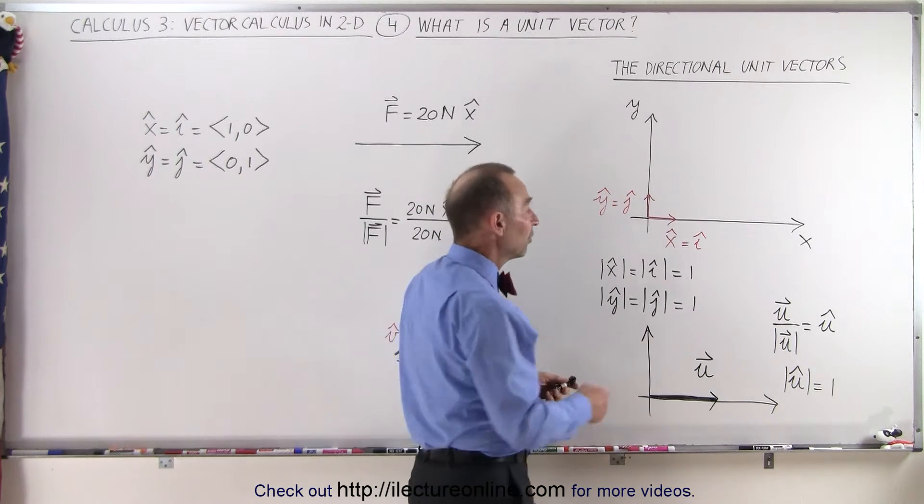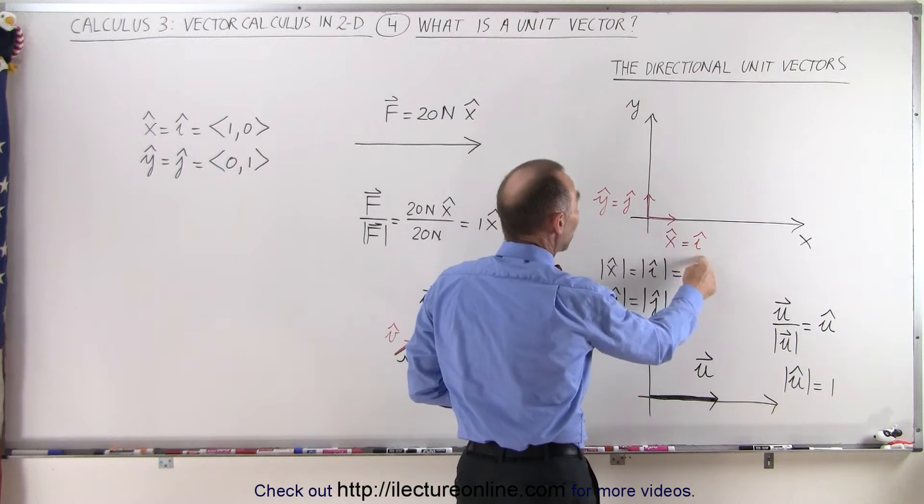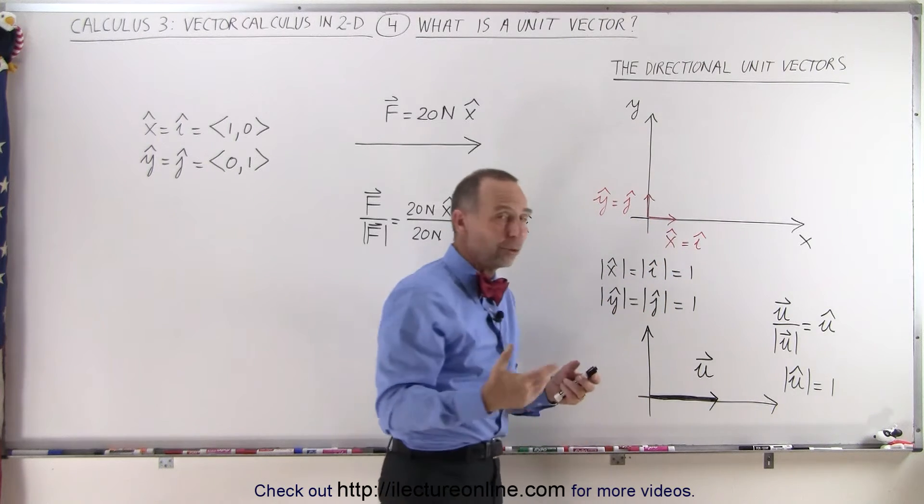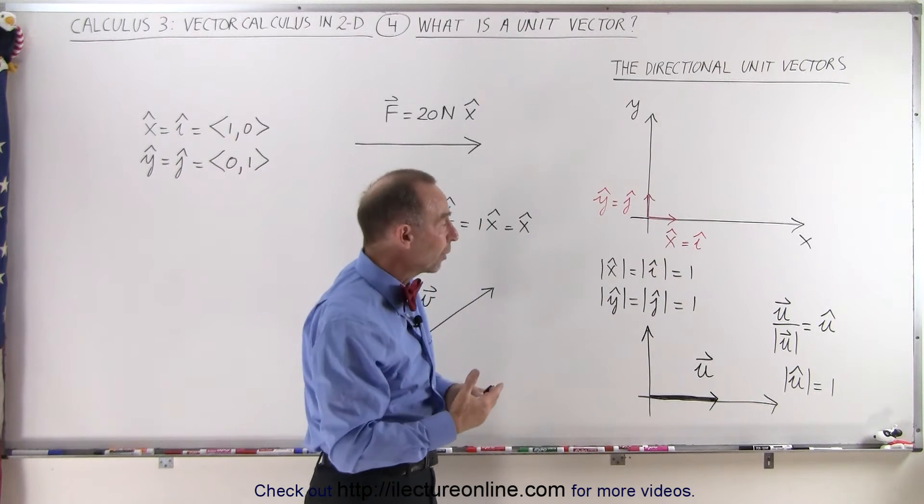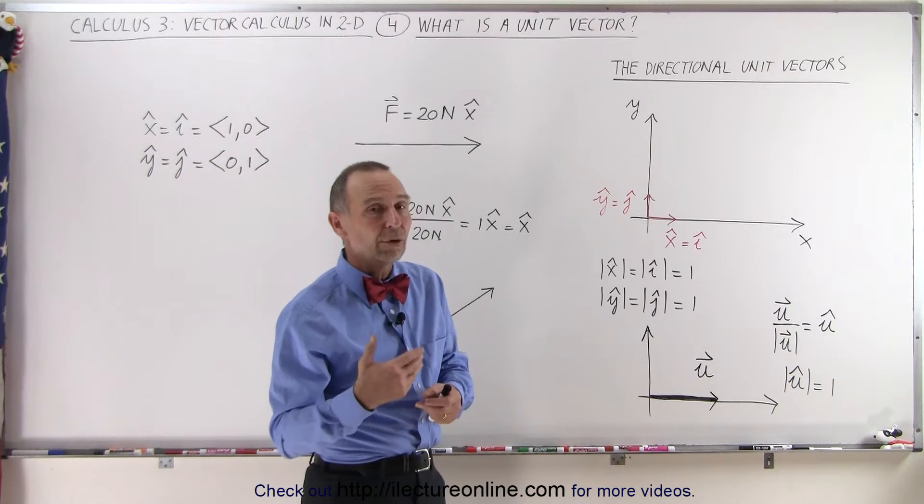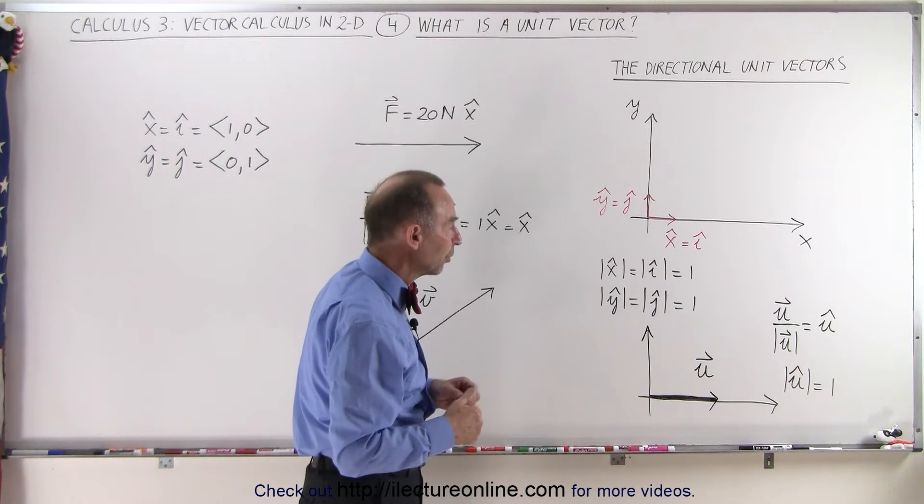As we said before, instead of using x and y, we can use i and j. And in the case of the third dimension z, the z-axis, we can use k instead of z in that case as well, which we'll see later.